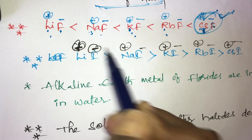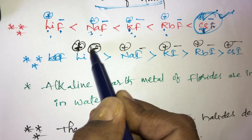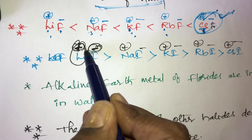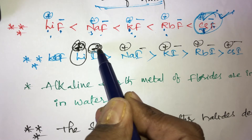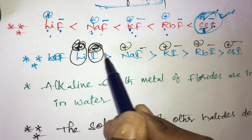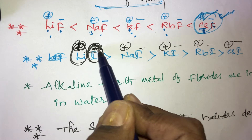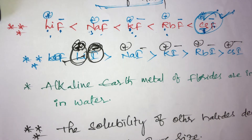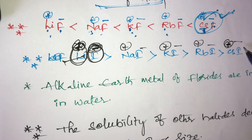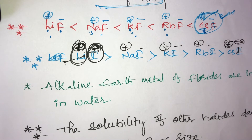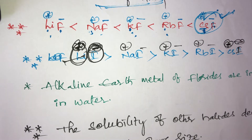Lithium is small size cation and iodine is large size anion. Small size of cation combined with large size of anion — this combination is highly soluble in water. For cesium iodide, cationic size is large and iodine anion is also large. If both cation and anion are large size, that compound is least soluble in water.